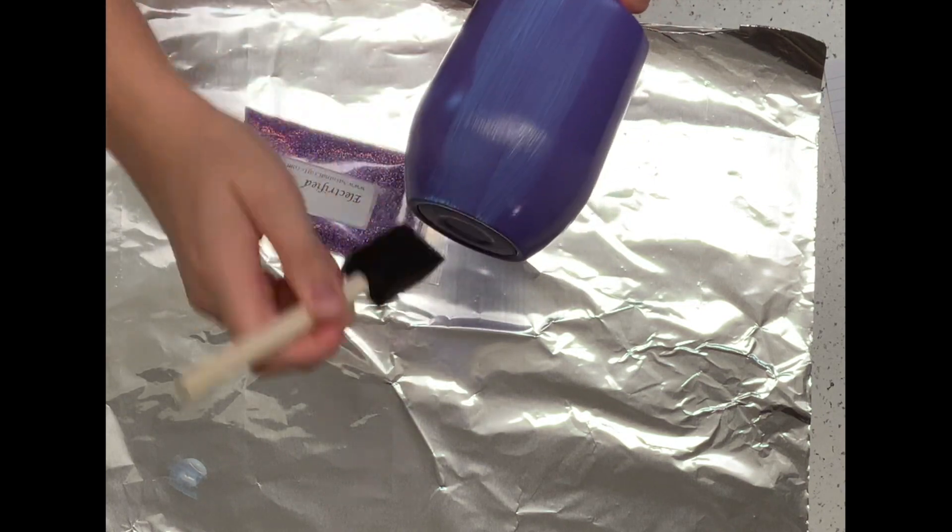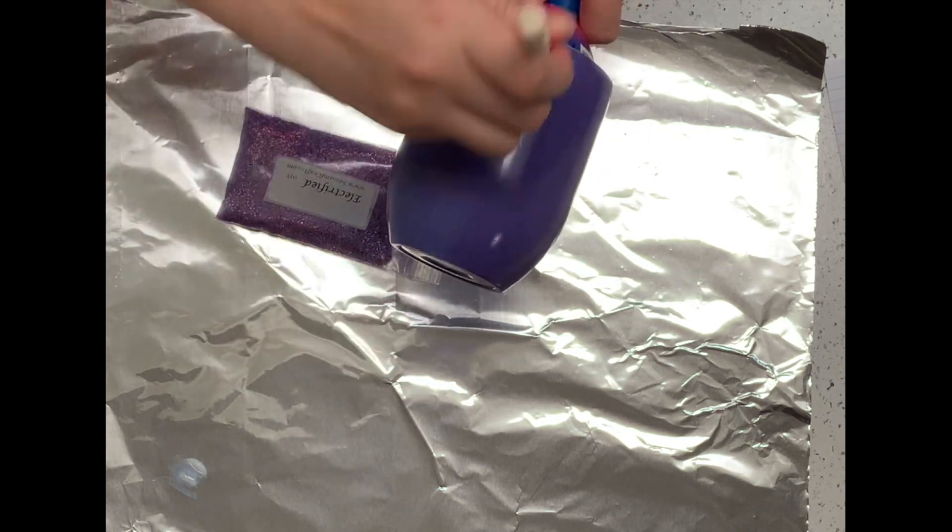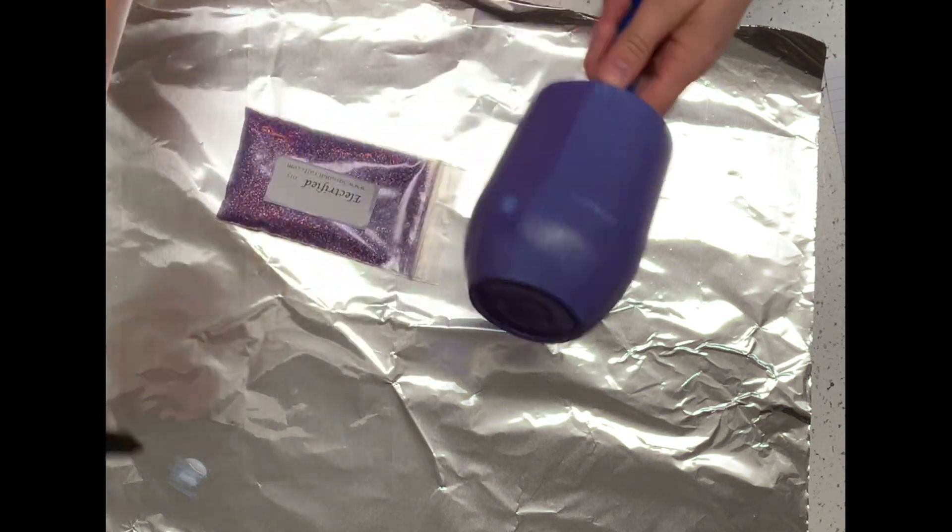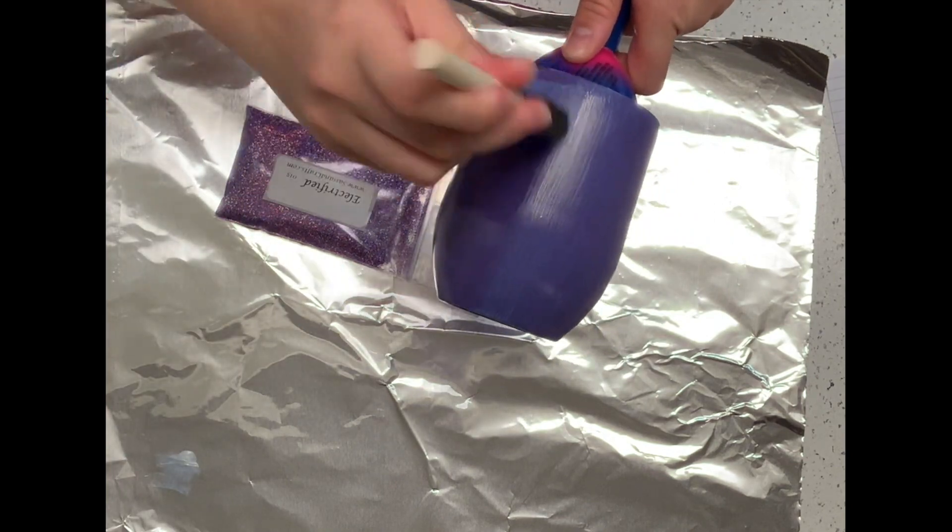I'm going to try to keep it nice and smooth on the overlap so that I don't have any areas that are chunky. And I'm going to do this all the way over the whole tumbler.